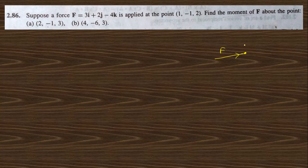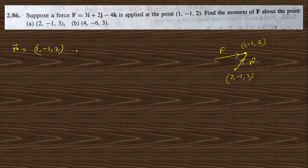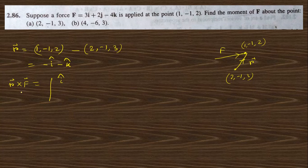Next, question 2.86: suppose force F is applied at point (1, −1, 2). Find the moment of force about two given points. For part a, the reference point is (2, −1, 3). The position vector r = (1−2, −1−(−1), 2−3) = (−1, 0, −1), giving r = −i cap + 0j cap − k cap.